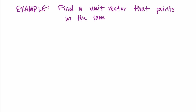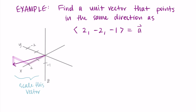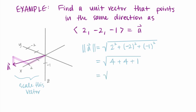Let's find a unit vector that points in the same direction as ⟨2, −2, −1⟩. I'll try to draw this in three dimensions: it goes 2 in the positive x direction, −2 in the y direction, and −1 in z, so it points down and back. This clearly isn't a unit vector since its length is greater than 1. Calling this vector a, let's find its magnitude: √(2² + (−2)² + (−1)²) = √(4 + 4 + 1) = √9 = 3.